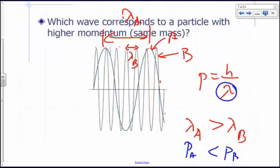All right, so we say then that a shorter wavelength is associated with a higher momentum. We say momentum and wavelength are inversely proportional.